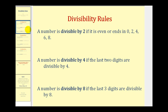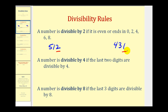A number is divisible by 2 if it is even or ends in 0, 2, 4, 6, or 8. For example, if we take a look at 512 and 431, we're only concerned about the last digit or the digit in the 1's place value. 512 ends in 2, which means it's even and therefore divisible by 2. However, 431 ends in a 1, which means it's odd, and it is not divisible by 2.